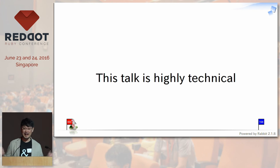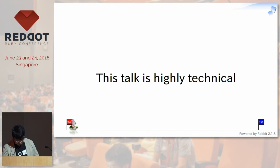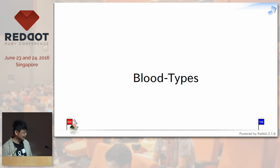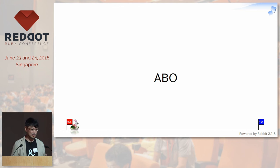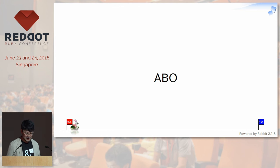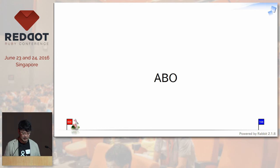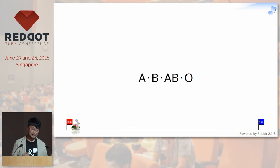Let me talk about types. Blood types. Mankind has several types of blood types. The most famous one is the ABO system. The ABO system classifies our blood type according to the presence of factor A and factor B. We have four types of blood types in the ABO system.